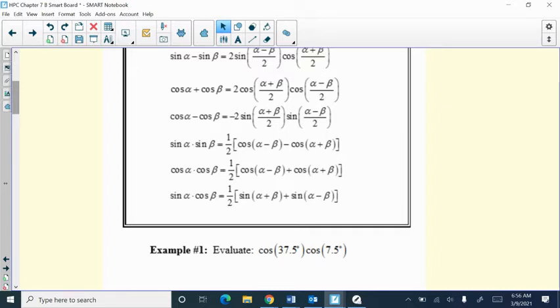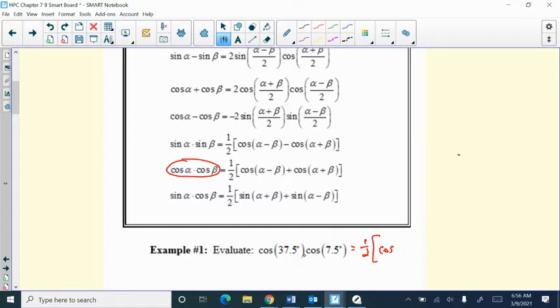For example, if you have cosine 37.5 times cosine of 7.5, that's a product of two cosine functions, and each of them not really of very nice values in terms of using or solving this without a calculator. But if I think about if I have a product of these two, is there another way to represent this product? When I look up here, it's cosine cosine. So I can rewrite that as one-half times cosine of alpha minus beta. So that would be 37.5 minus 7.5, which is 30,